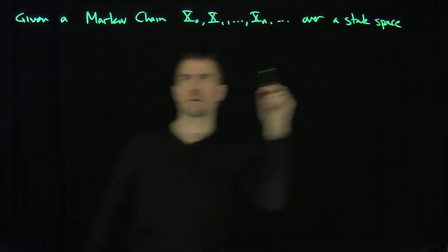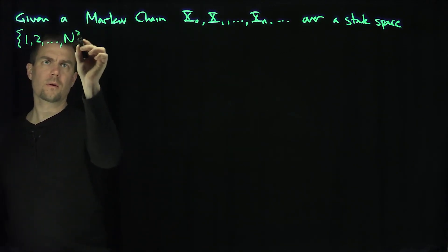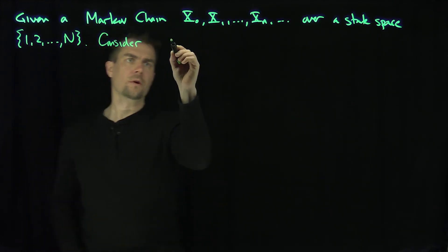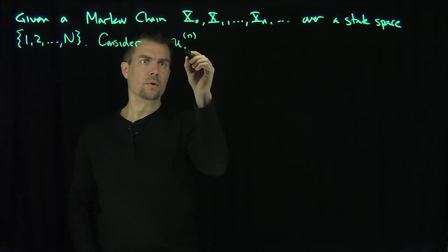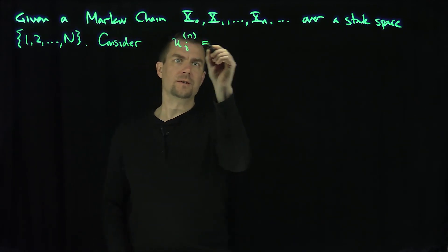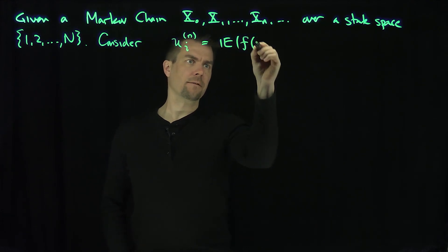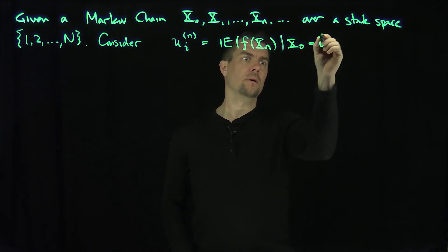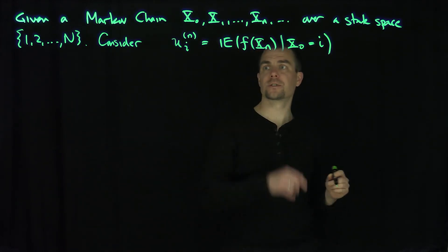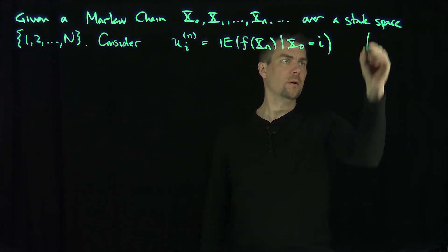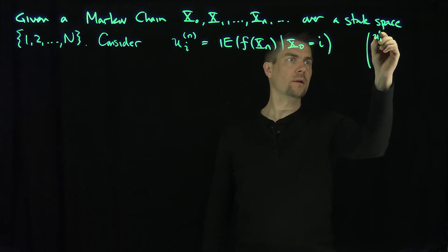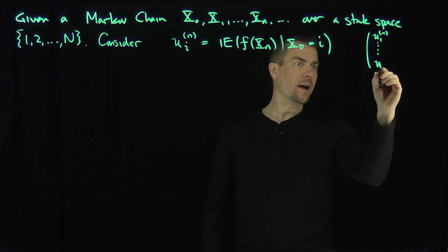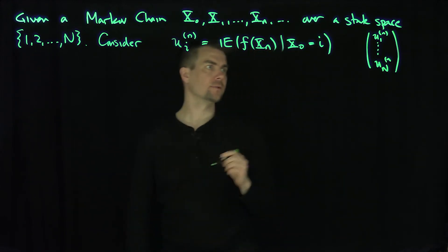I'm just going to use state space 1 to n. Then let's consider a column vector u_n, whose i-th entry is the expected value of some function f of x_n, given that x0 is equal to i. I'm going to think of this as a column vector in the i variable — entries u_{1,n} through u_{n,n}. That's the column vector u_n.